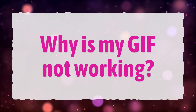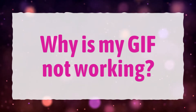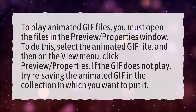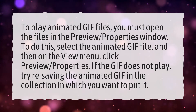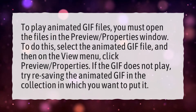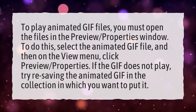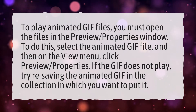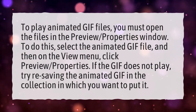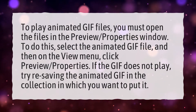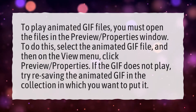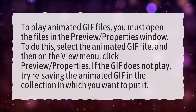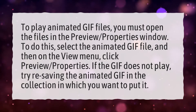Why is my GIF not working? To play animated GIF files, you must open the files in the Preview Properties window. To do this, select the animated GIF file, and then on the View menu, click Preview Properties. If the GIF does not play, try re-saving the animated GIF in the collection in which you want to put it.